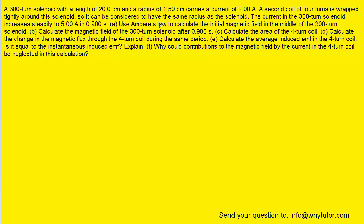In part A, we're being asked to use Ampere's law to calculate the initial magnetic field in the middle of the 300-turn solenoid. The information for the 300-turn solenoid is given in the first sentence, and we know from Ampere's law that the magnetic field produced on the inside of a solenoid is given by the following equation.